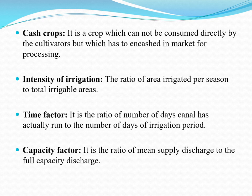Next is cash crops. A cash crop is a crop which cannot be consumed directly by the cultivators but which has to be encashed in the market for processing. These crops are called cash crops. Examples include tea, cotton, tobacco, and sugarcane.